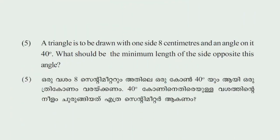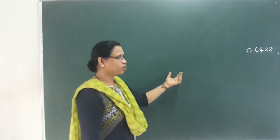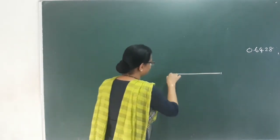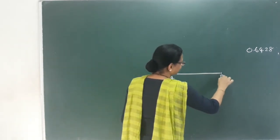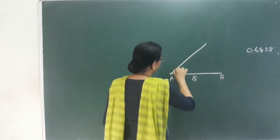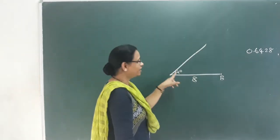This is the area. Next question — that means the 5th question. A triangle is to be drawn with one side 8 centimeters and an angle on it of 40 degrees. What should be the minimum length of the side opposite to this angle? One side length is 8 centimeters, label AB. This angle is 40 degrees.